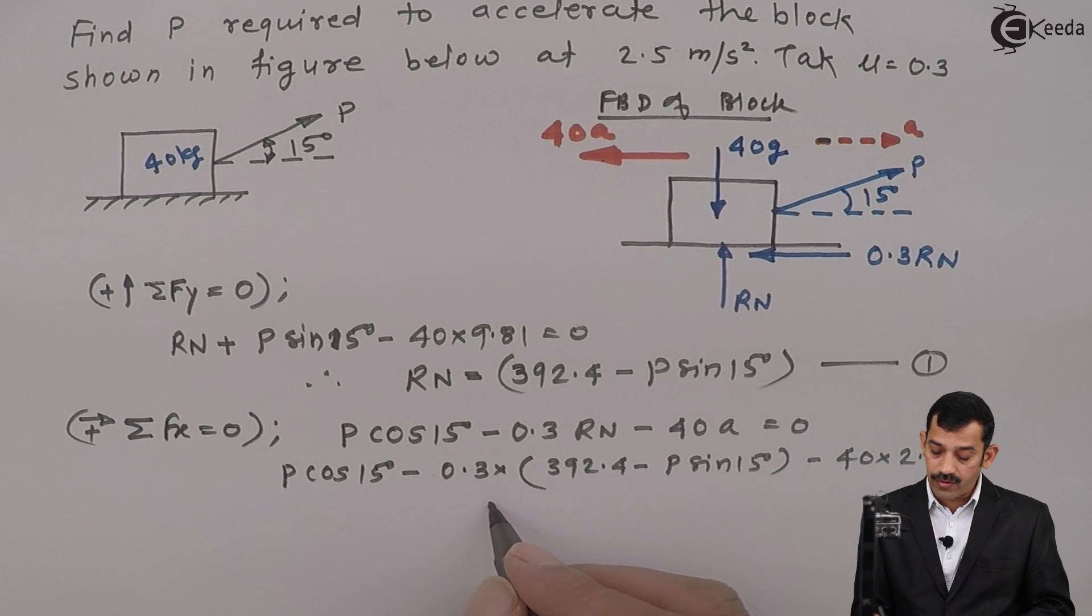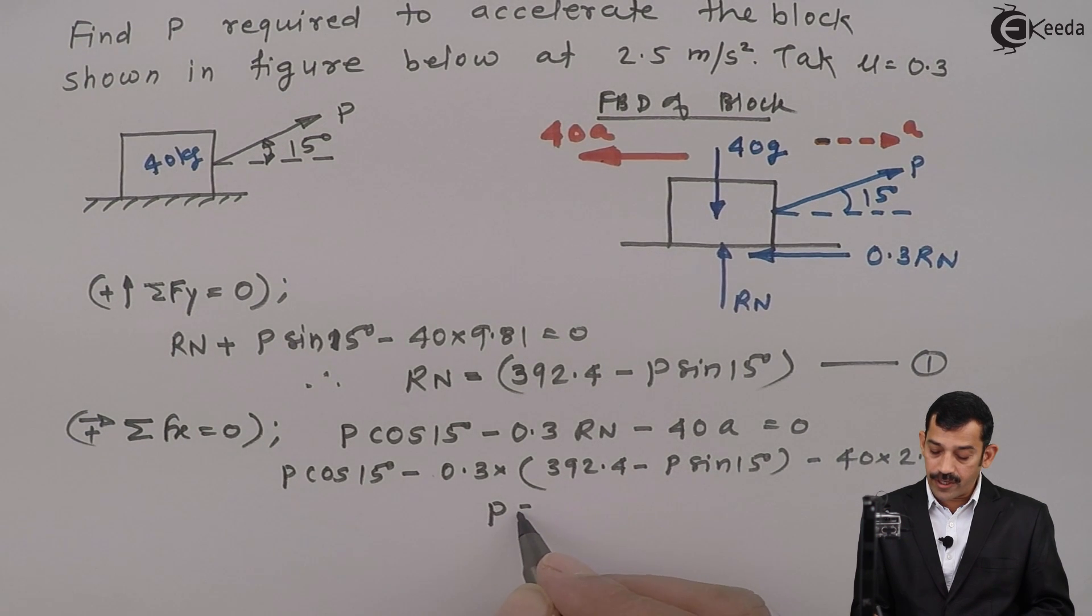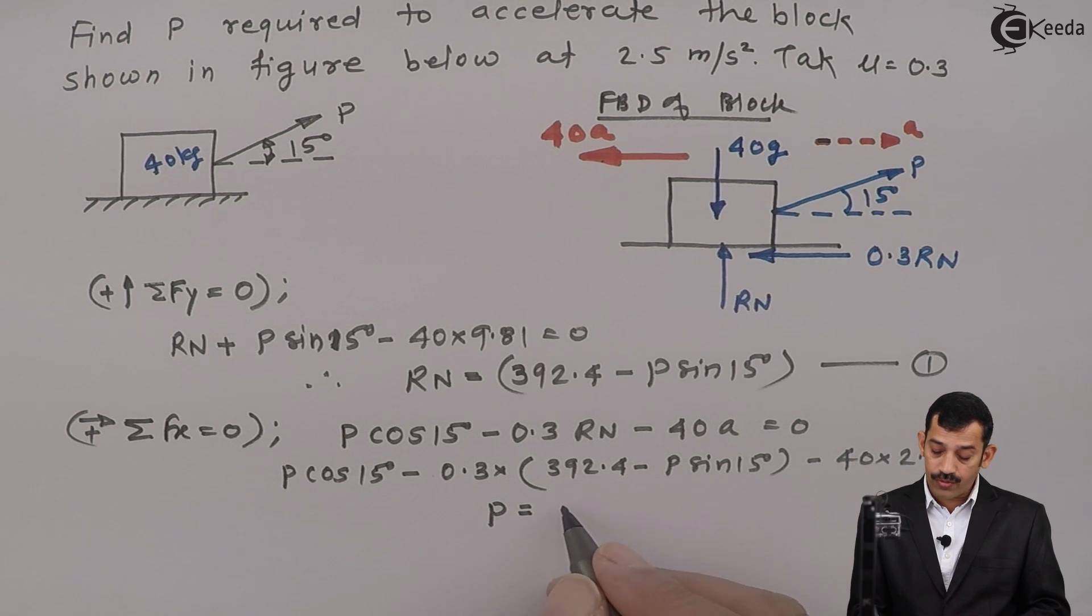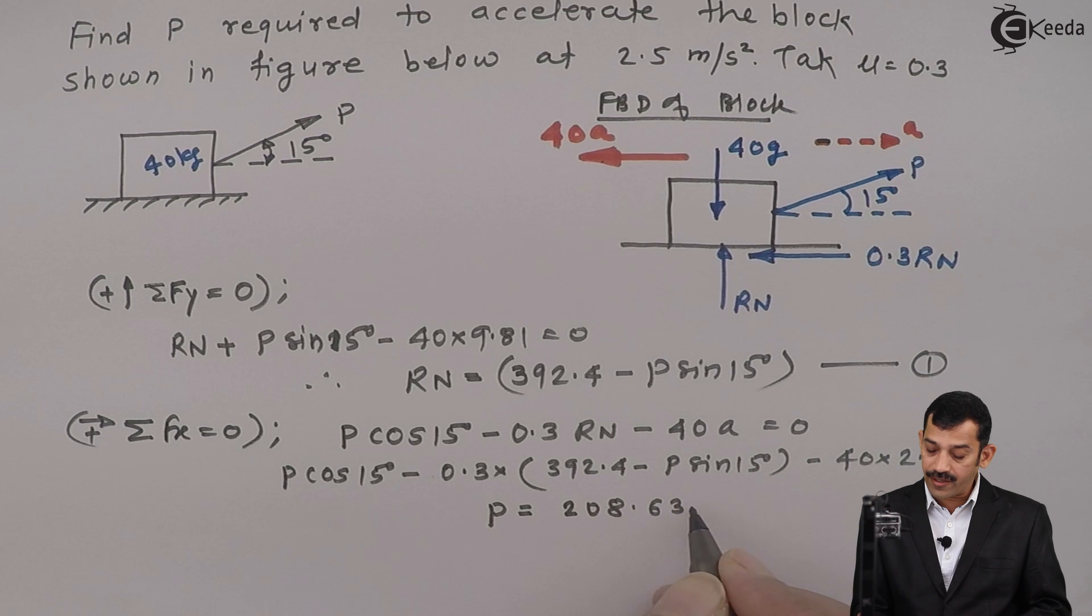The equation is in terms of only one unknown, that is P. If you calculate using a calculator, P value comes out to be 208.63 Newton.